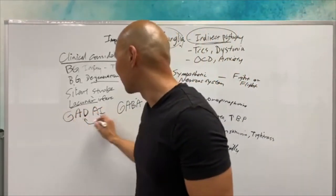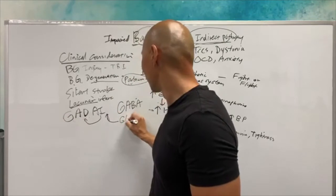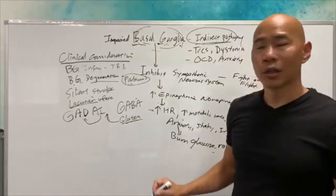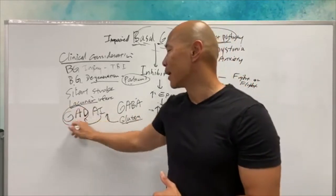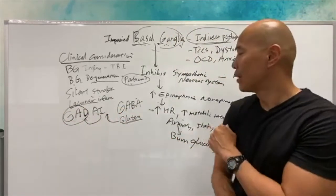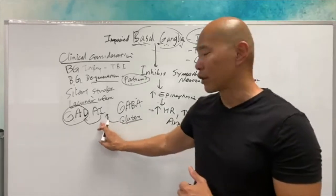This can be due to gluten. Gluten sensitivity is known to create cross-reactivity to this enzyme in your body that helps you produce GABA. So we can have a gluten problem that can trigger an autoimmunity.